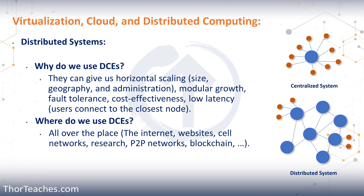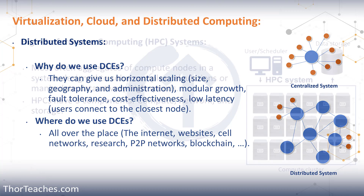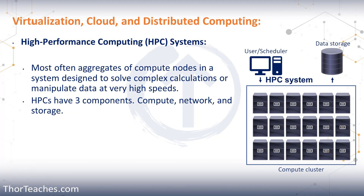We really use distributed systems everywhere: it's the internet, websites, cell phone networks, research, peer-to-peer networks, blockchain, and thousands of other things. Then we talked about high performance systems. The most well-known type are supercomputers. We have built all these systems with the exact specs we need for one task, and we have a user or a scheduler that controls all those systems. The important part, just like with anything else we do with servers, is we need to have enough compute, network, and storage for whatever we're doing — they need to be aligned.